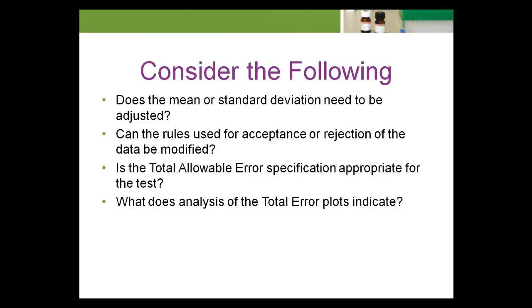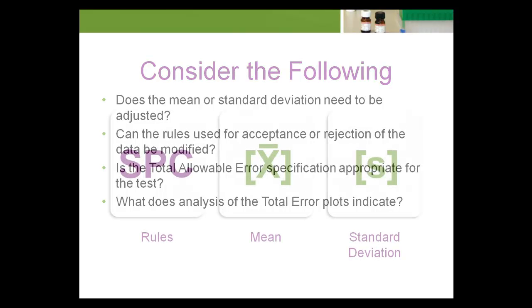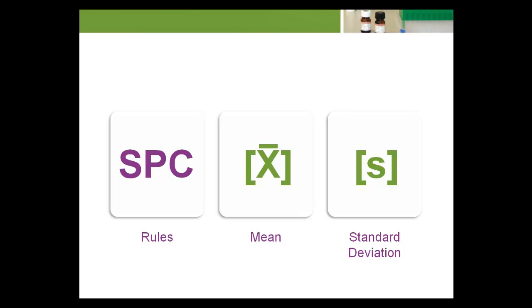Let's look at each of these questions in more detail. Let's start here. A laboratory can have an apparently satisfactory statistical process control system in place.